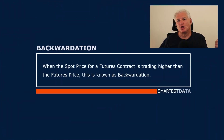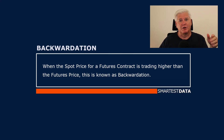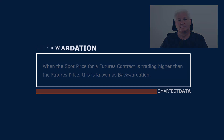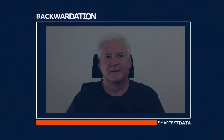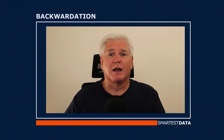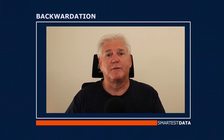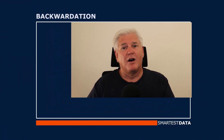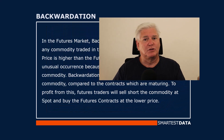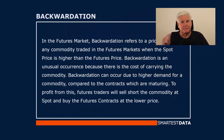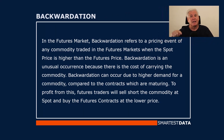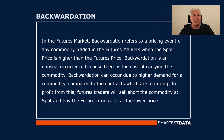Backwardation occurs when the spot price for a futures contract is trading higher than the futures price. In the futures market, backwardation refers to a pricing event of any commodity traded in the futures market when the spot price is higher than the futures price.